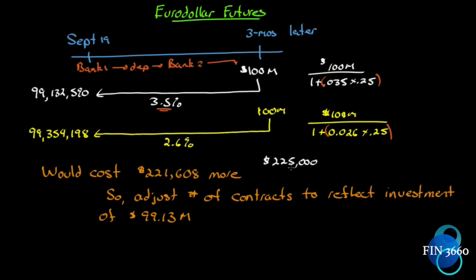You may say: so what, that's good — we actually made more money, $225K not $221K, bonus! But that's not what we're trying to do. $221K represents locking in 3.5%; going from $221K to $225K represents speculation. We don't want to speculate, because what if it went the other way? Instead of being up $3,400 we'd be down $3,400. We want to get it right.